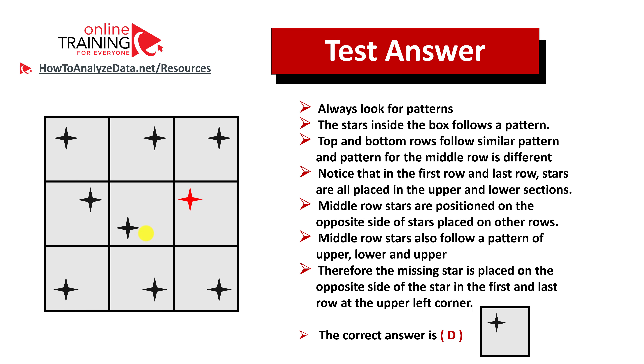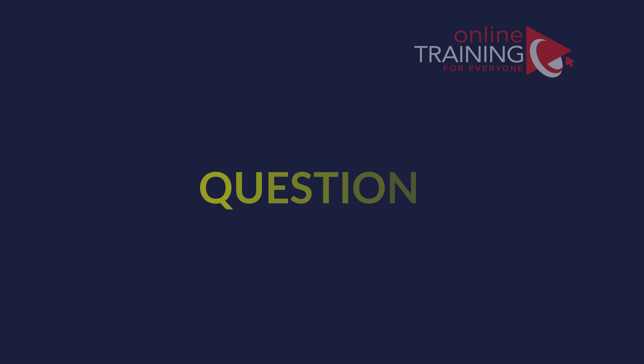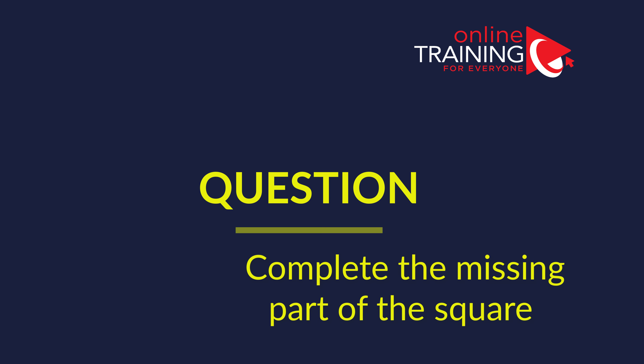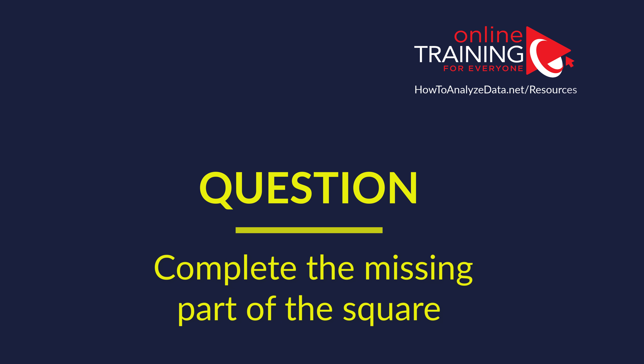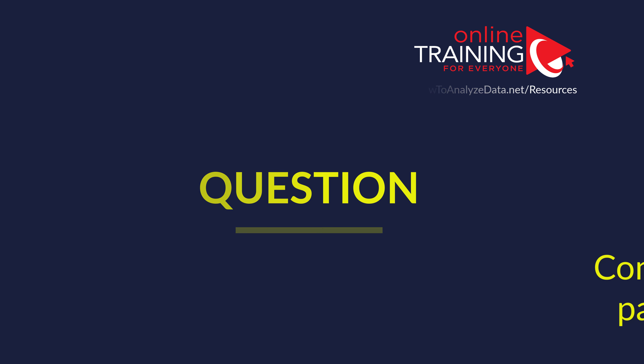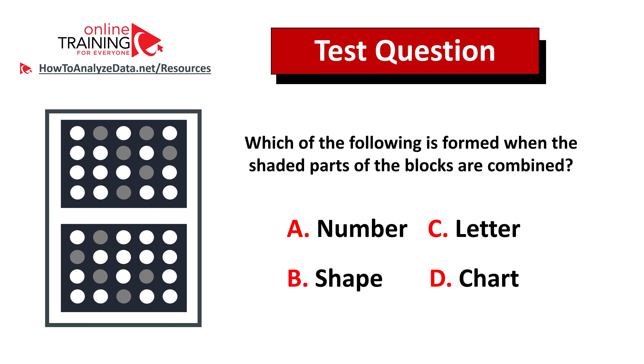Therefore the missing star is placed on the opposite side of the star in the first and last row, at the upper left corner, so the correct choice is choice D.